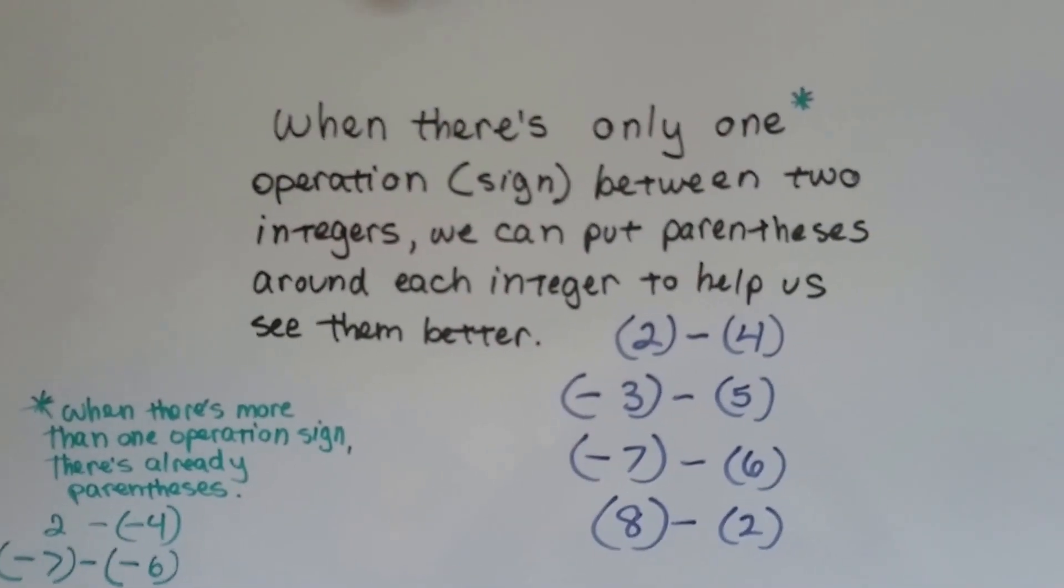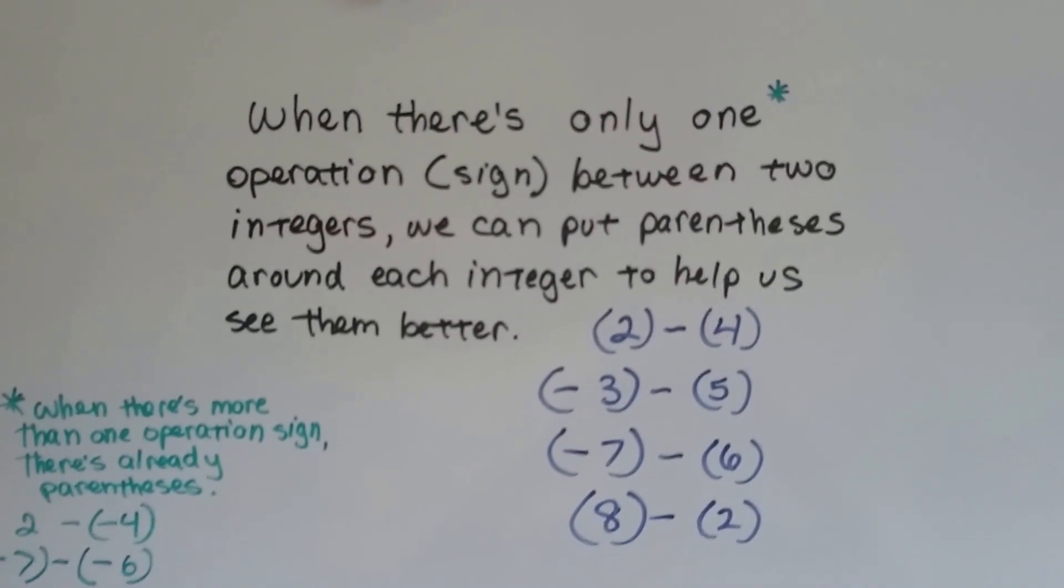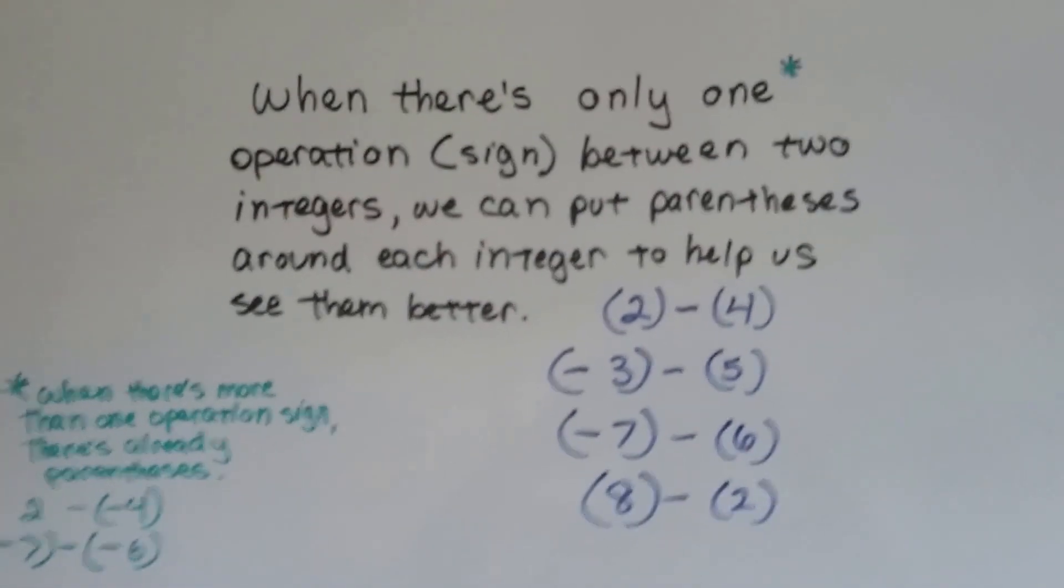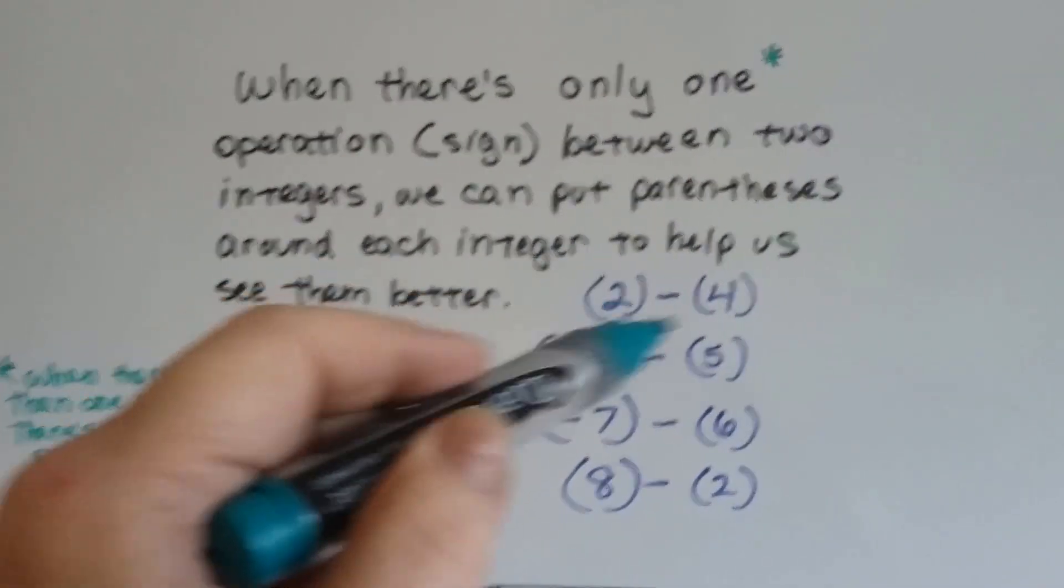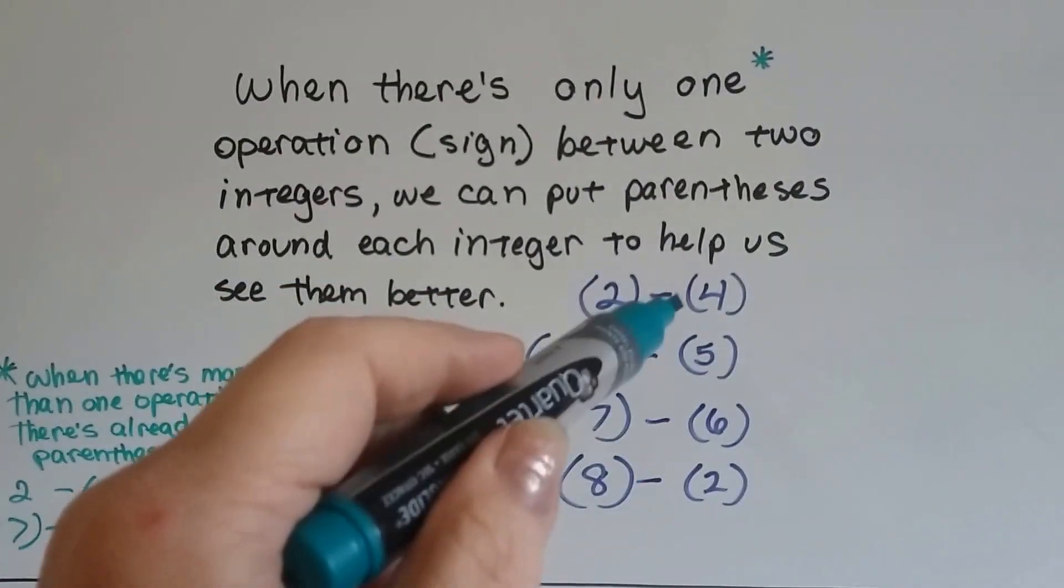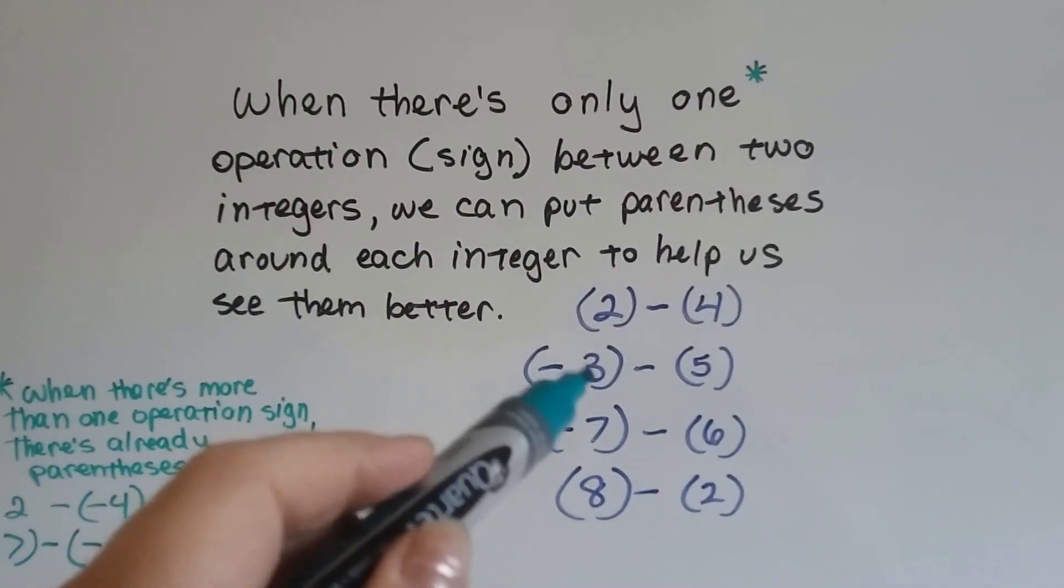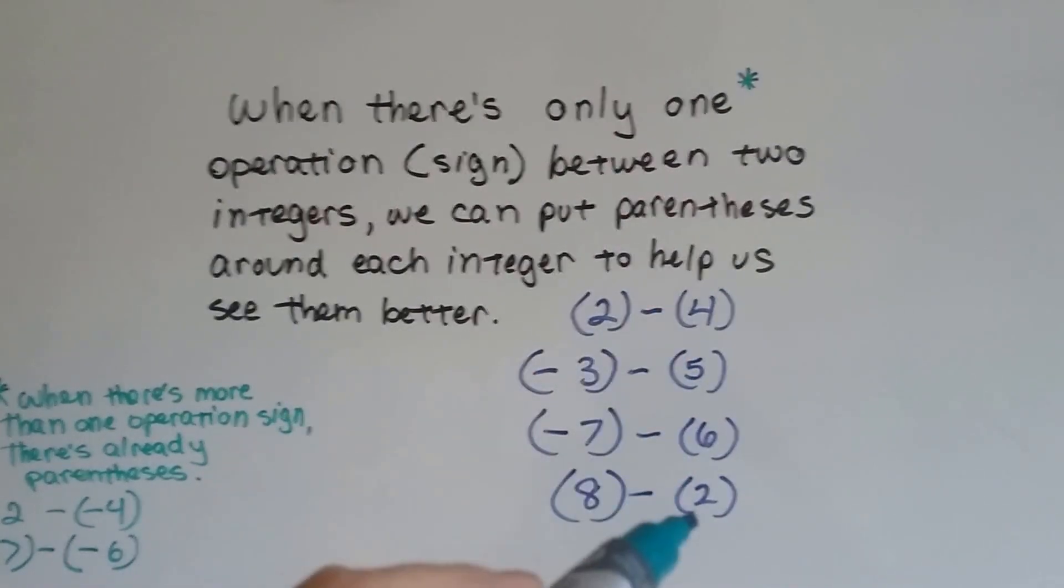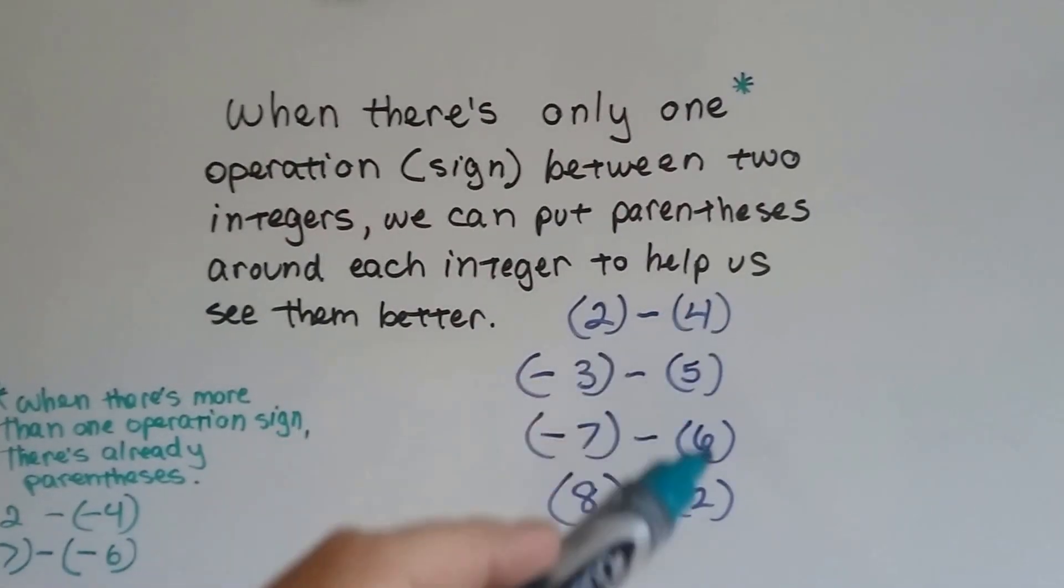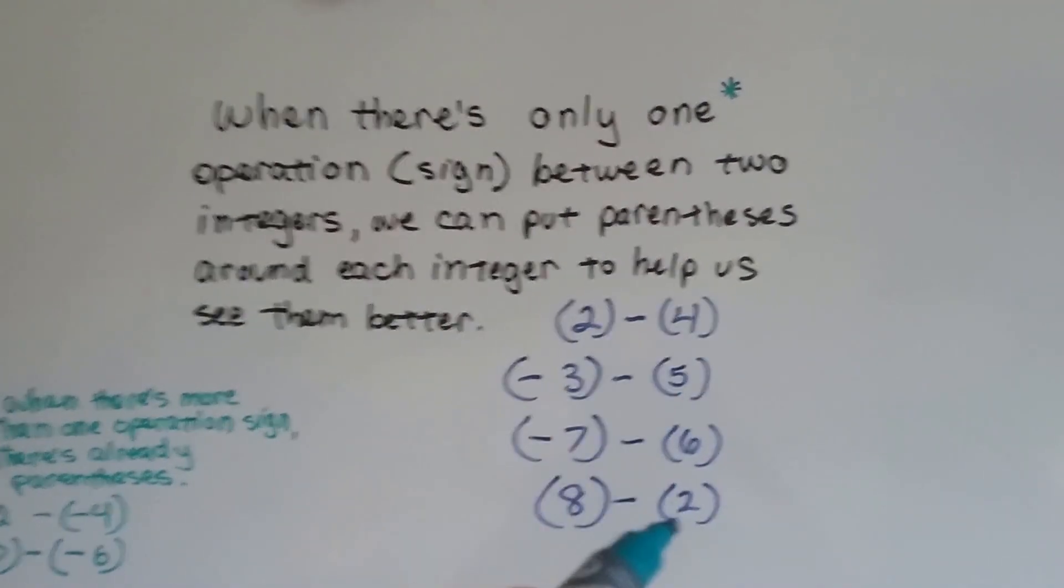When there's only one operation sign between two integers, we can put parentheses around each integer to help us see them better. If you have 2 minus 4, just put little parentheses around them because there's one operation sign in between here. And it'll help you see that there's a negative 3 minus a 5. And we know that when there's no sign that it's a positive 5 or a positive 4, positive 6, positive 2. That we're just taking away that positive number.